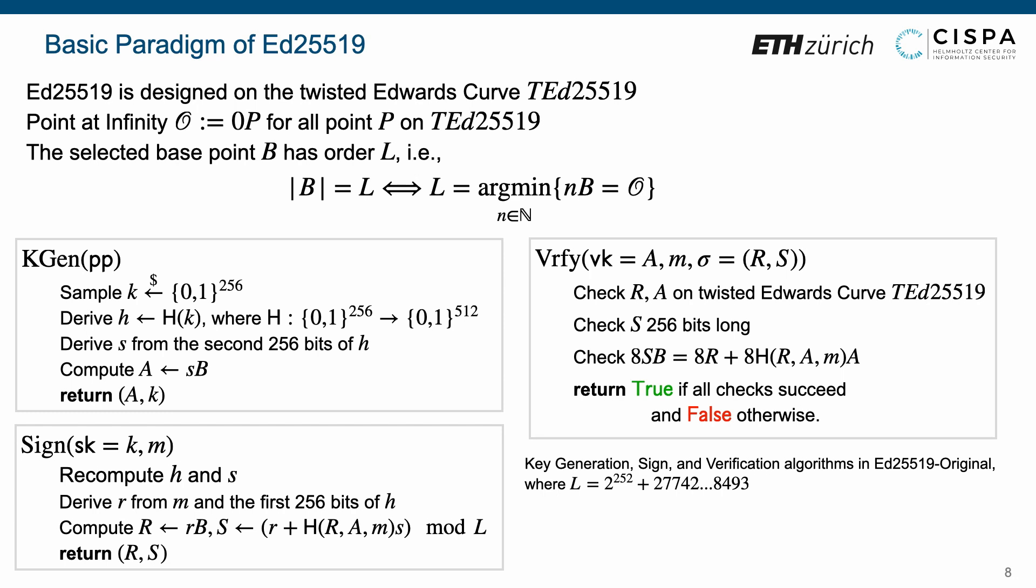The ED25519 original consists of three algorithms. The key generation algorithm inputs public parameter and samples a key with length 256 bits. Next, it derives a 512-bit long value H by applying a hash function to this key.